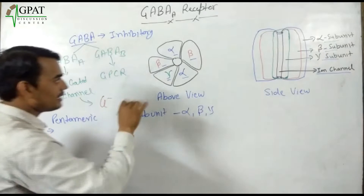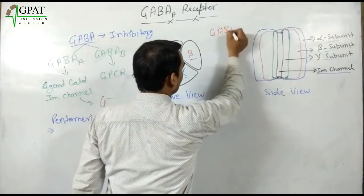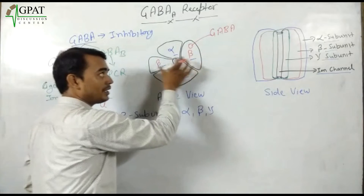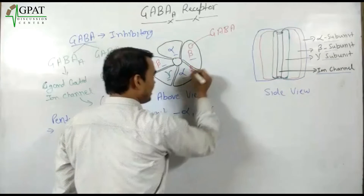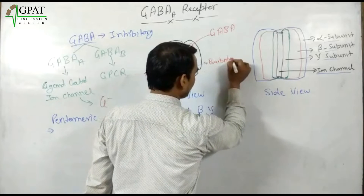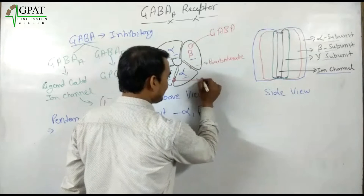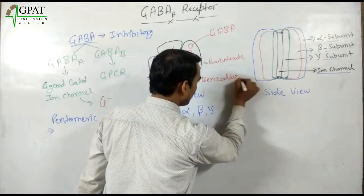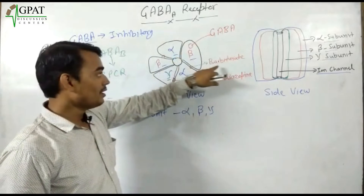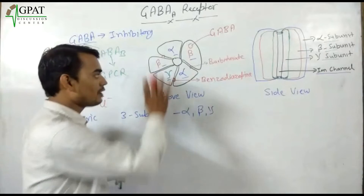There are different binding sites on the GABA-A receptor. First, GABA has a binding site on the beta subunit — both beta subunits have a binding site for GABA. Second, at the alpha-beta interface there is a binding site for barbiturate. Third, at the alpha-gamma interface there is a binding site for benzodiazepine.